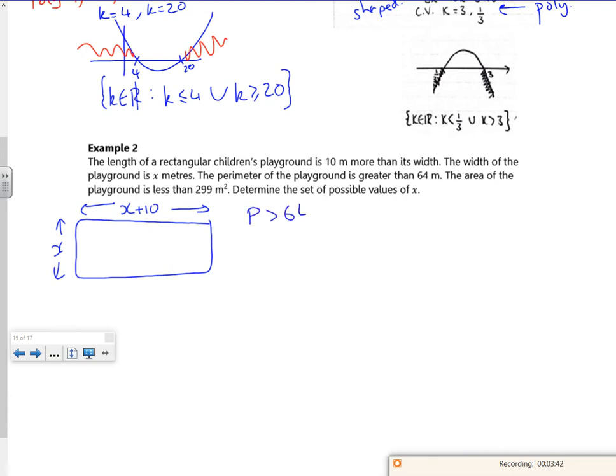The perimeter has to be greater than 64. So the perimeter has to be greater than 64. So that just means then that x plus x plus 10, doubled, has to be greater than 64. So what do I get? So we've got 4x plus 20 is greater than 64. 4x is greater than 44. x is greater than 11 meters. So I know x is greater than 11 meters.